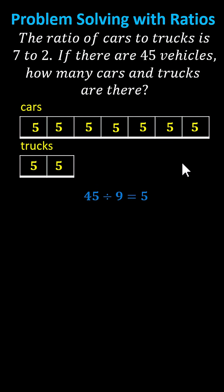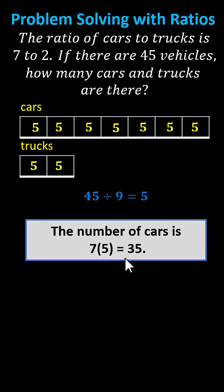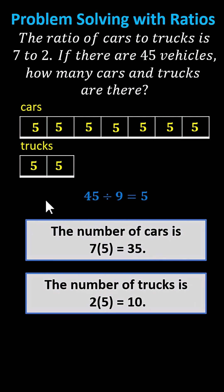And now we can easily determine how many cars and trucks there are. The number of cars is equal to seven times five, which is 35. The number of trucks is two times five, which is 10.